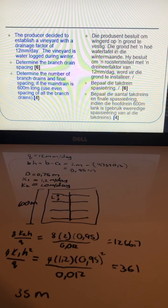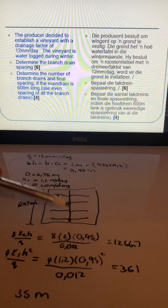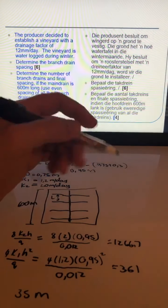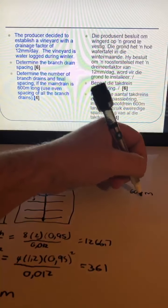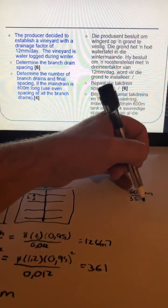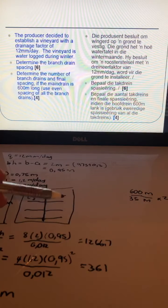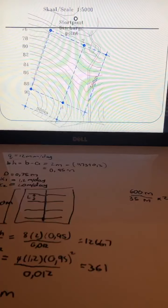The next question asks you to determine the number of branch drains and final spacing if the main drain is 600 meters long. Since spacing is 35 meters, you take 600 divided by 35, then multiply by 2 — because you have drains on both sides of the main line. That gives the total number of lateral drains to install in the field.